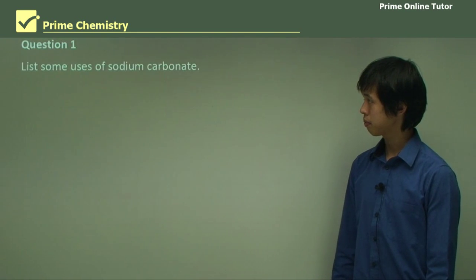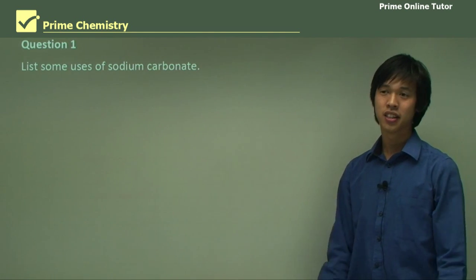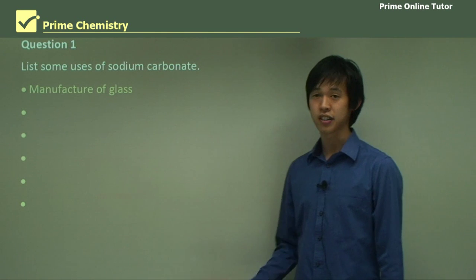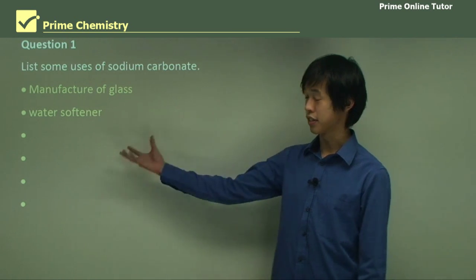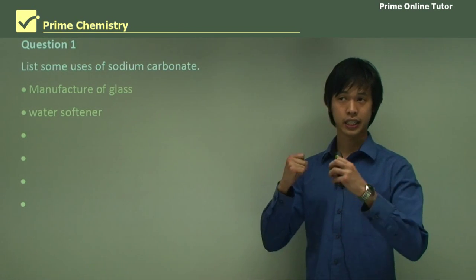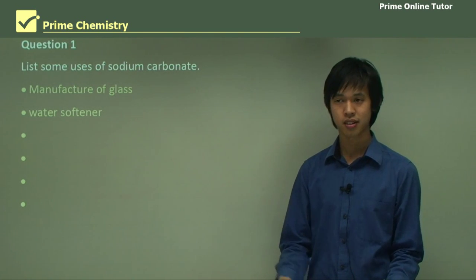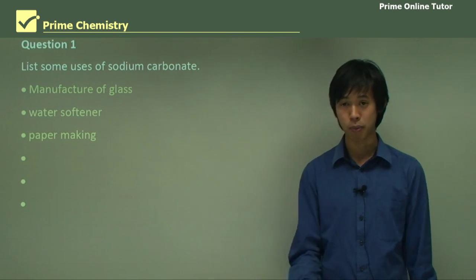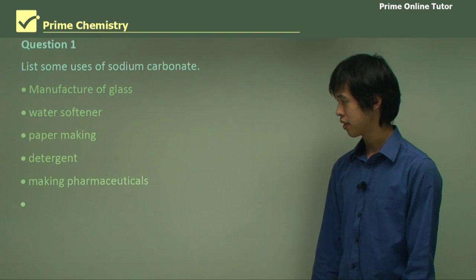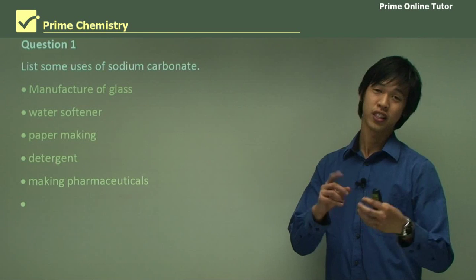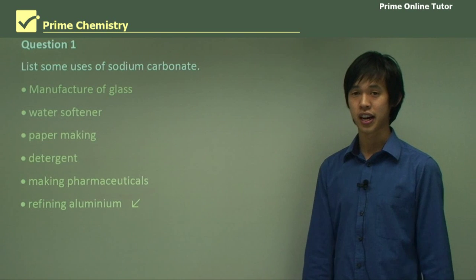Question one: list some uses of sodium carbonate. First, the manufacture of glass — called soda glass. It's used as a water softener because the carbonate group reacts with mineral ions to form precipitates, softening the water. It's used in paper making to stabilise peroxides. It can be used as a detergent. It's used in making pharmaceuticals to fill out pills and to create foaming action. And it's used in the refining of aluminium.